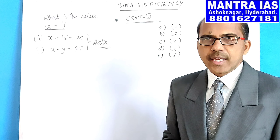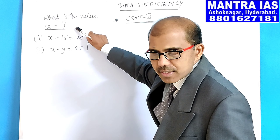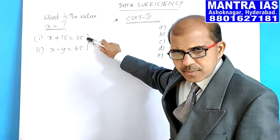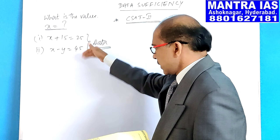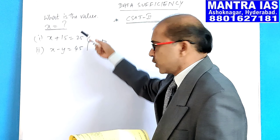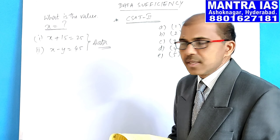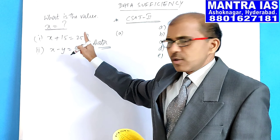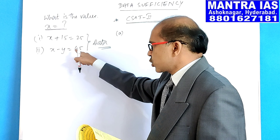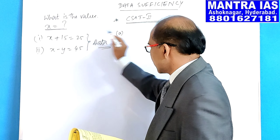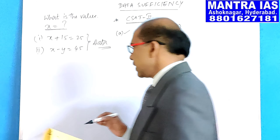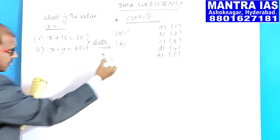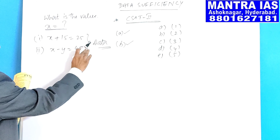The logic is very important. If you answer the given question by using the first statement — if you get the answer by using the first statement but the second statement is not at all useful — then we have to mark the answer as A. If you get the answer by using the second statement alone, we mark the answer as B.